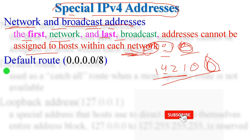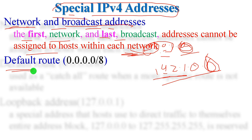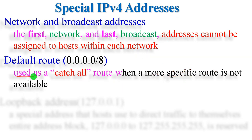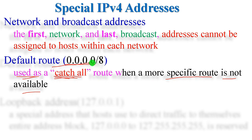The default route address is 0.0.0.0. This is a default special IP version 4 address. It is used as a catch-all route — when no more specific route configuration is available, we use the default route. It is used for internet access and data exchange.